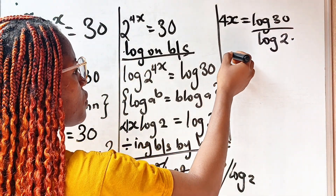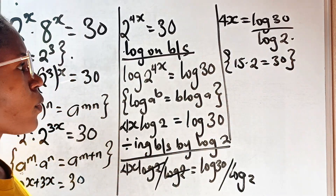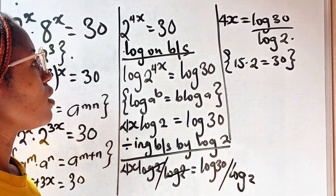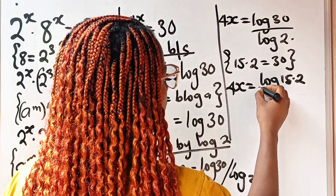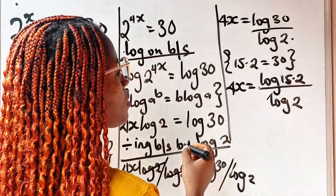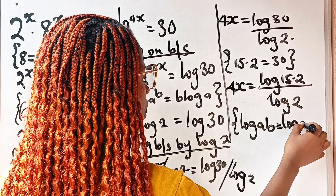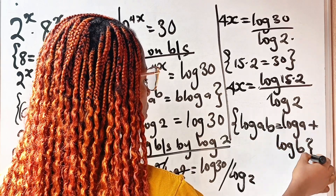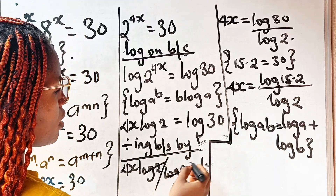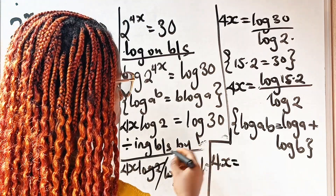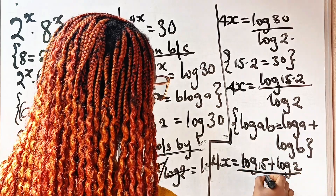Now let's express 30 in terms of 2. 30 in terms of 2 is 15 multiplied by 2, which gives us 30. Therefore we replace 30 with 15 multiplied by 2. So we have 4x equals log of 15 multiplied by 2, divided by log 2. Recalling that log AB equals log A plus log B, we will have 4x equal to log 15 plus log 2, all divided by log 2.